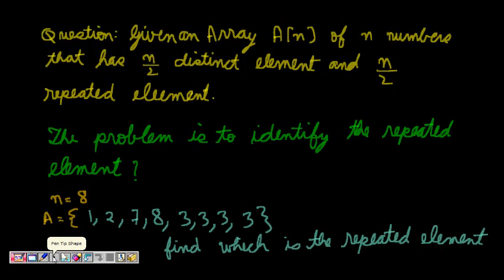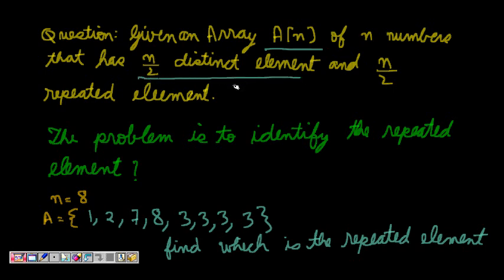In this lecture we will learn about a problem from randomized algorithms. It's a very beautiful small question: given an array A of size n, there are n integers in the array. It has a peculiar property — it has n/2 distinct elements and n/2 repeated elements. The problem is to identify the repeated element.